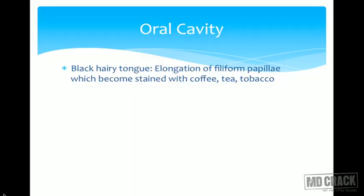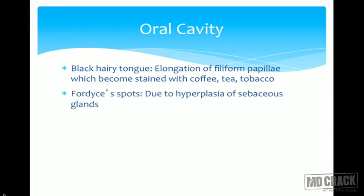Black hairy tongue is actually the elongation of highly formed papillae which become stained with tea, coffee, or tobacco. Fordyce spots are seen due to the hyperplasia of the sebaceous glands, producing spots visible on the tongue. They are known as Fordyce spots.